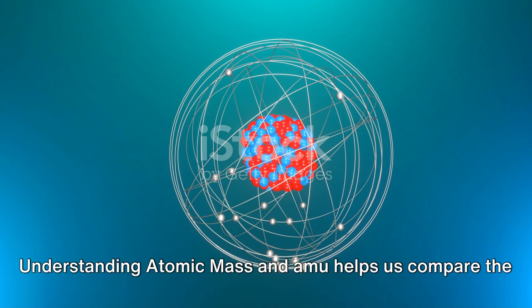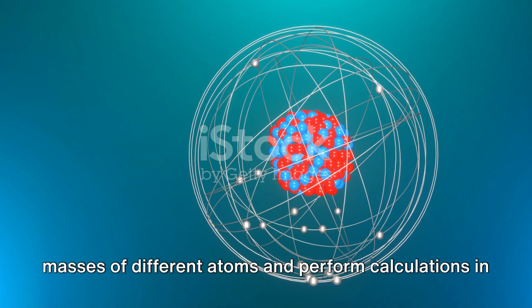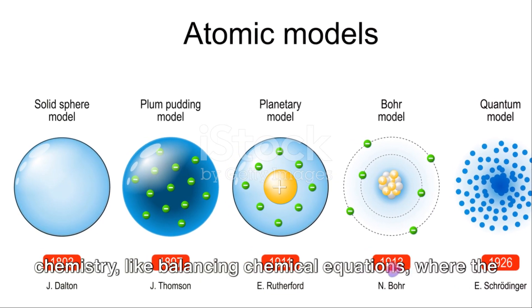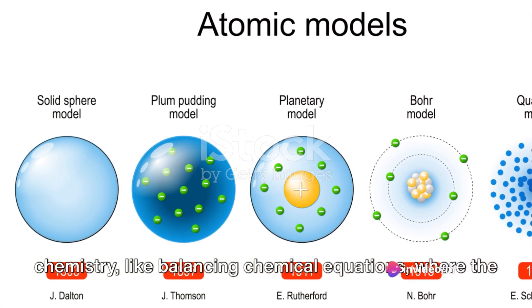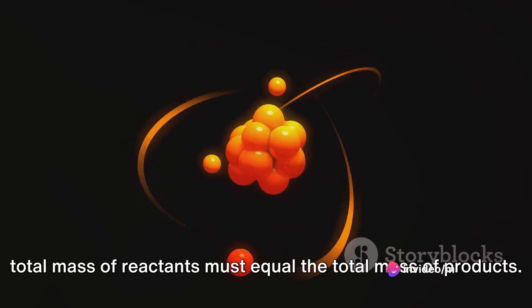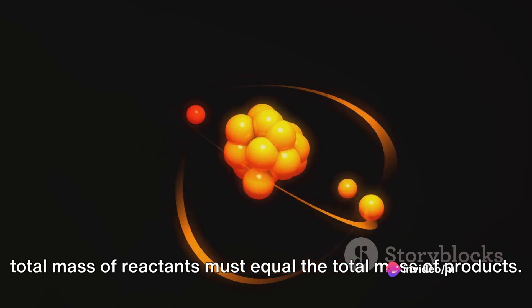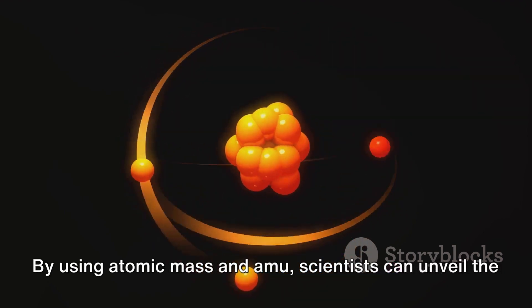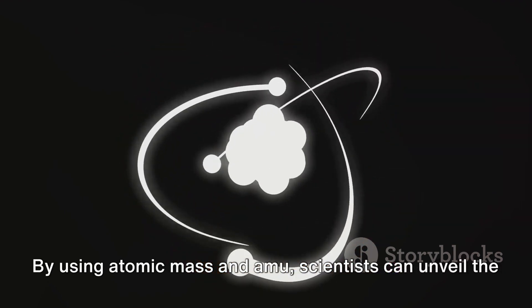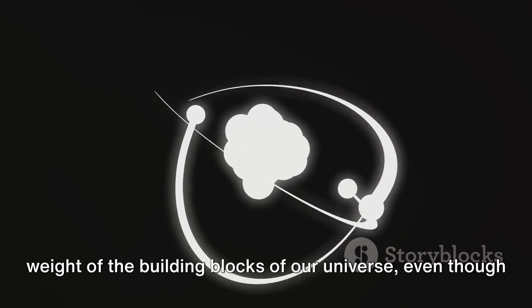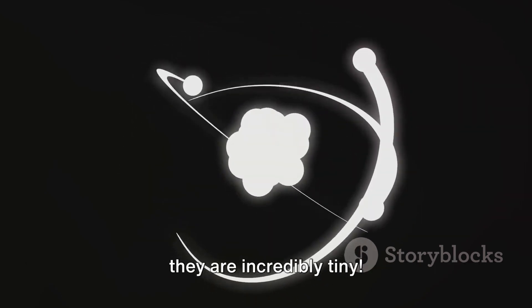Understanding atomic mass and amu helps us compare the masses of different atoms and perform calculations in chemistry, like balancing chemical equations, where the total mass of reactants must equal the total mass of products. By using atomic mass and amu, scientists can unveil the weight of the building blocks of our universe, even though they are incredibly tiny.